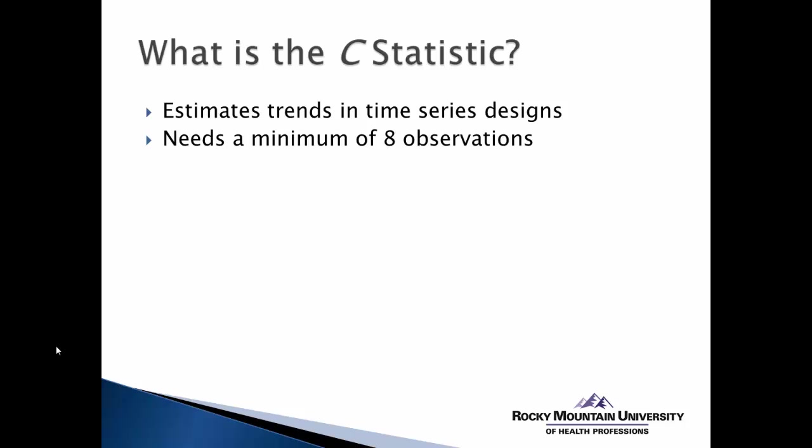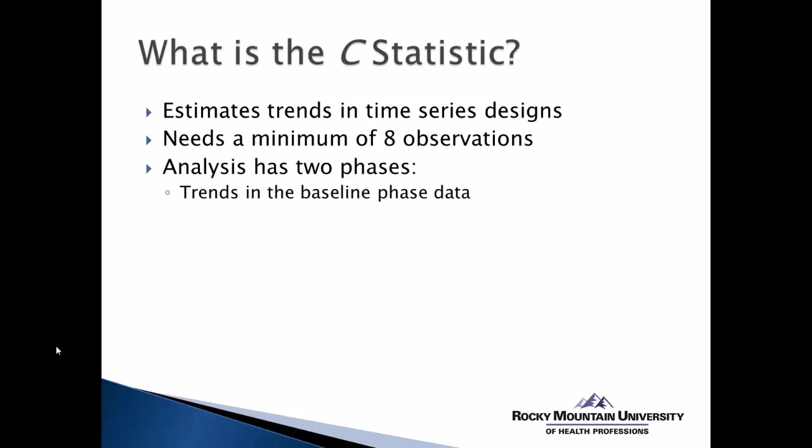In order to do this statistic, we need a minimum of eight observations, and the analysis has two phases. We first need to examine the trend in the baseline phase data to determine if it is stable — in other words, it does not have statistically significant changes within it. Once we determine that the baseline phase is stable, we examine the trend in the treatment phase data to determine if there are significant changes moving from baseline phase to treatment phase.